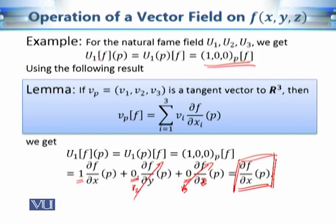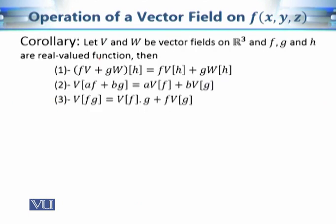Similarly, u₂(f) — corresponding to a direction parallel to the y-axis — gives the partial derivative of f with respect to y. And for u₃, we get the partial derivative of f with respect to z. Now let us look at some properties of this operation of a vector field on a function.